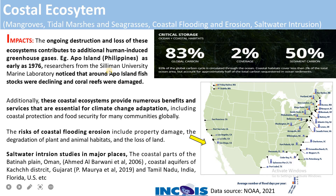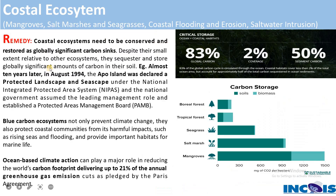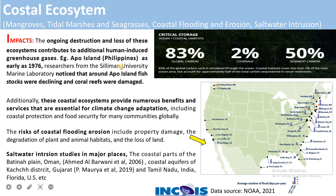For example, at Apo Island, a researcher from Silliman University Marine Laboratory noticed around 1976 that fish stocks had declined and coral reefs were damaged. This illustrates how coastal ecosystems can be damaged by human activities and global climate change. Additionally, these ecosystems provide not only carbon storage but also numerous benefits and services essential for climate change adaptation.